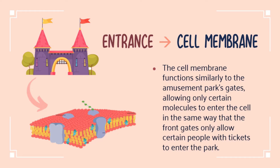Here is what we call ideal for protection, or simply the entrance of the park. The amusement park gates function similarly to the cell membrane, since the cell membrane only allows certain molecules to enter the cell. In the same way, the park gates only allow certain people with tickets to enter the park's premises.